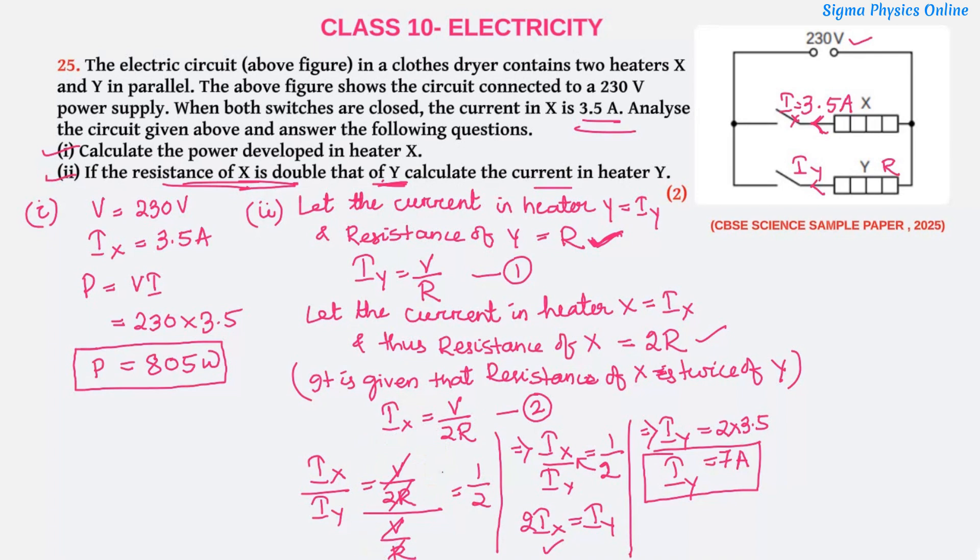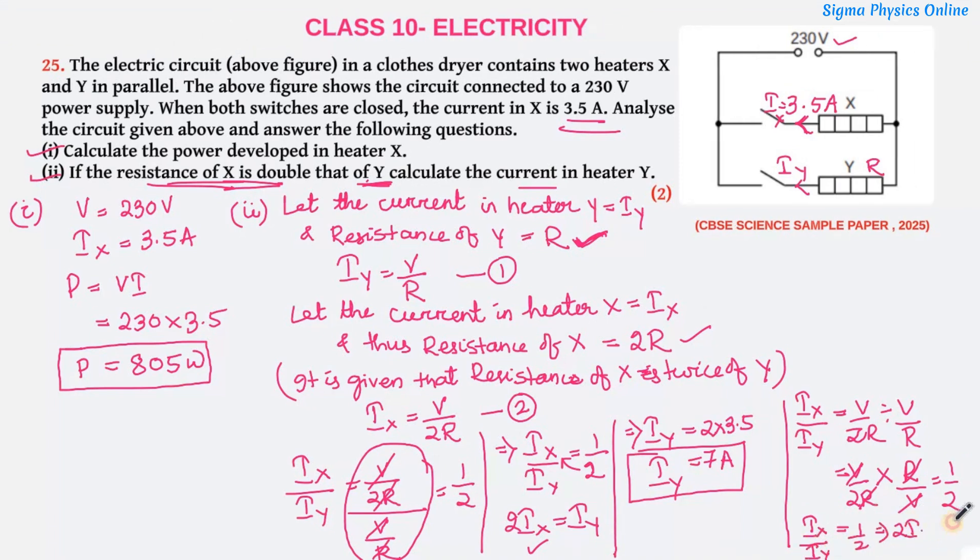Now if you are finding difficulty in solving this type of division, you can simply write IX by IY equals V by 2R divided by V by R. In order to cancel it, we have to change it into multiplication. When we change it into multiplication, V by R will be changed to its reciprocal, R by V. So VV cancels, RR cancels, that is 1 by 2. So again it becomes IX by IY is 1 by 2, or 2IX is IY. This is another simpler way to solve this.